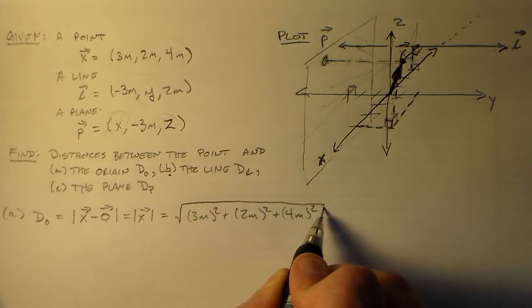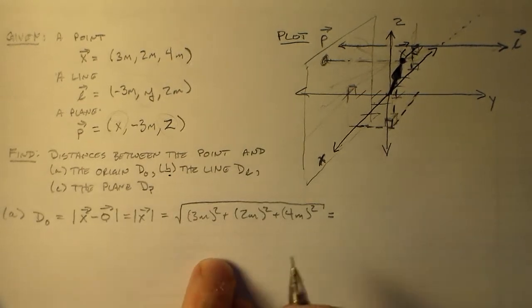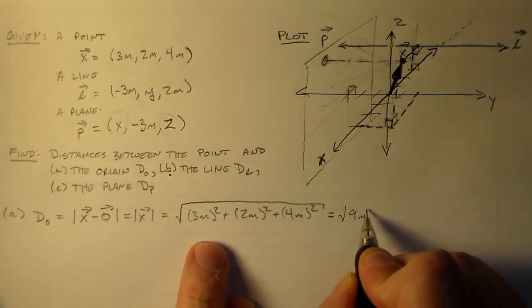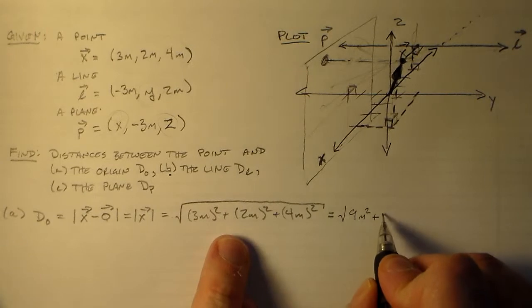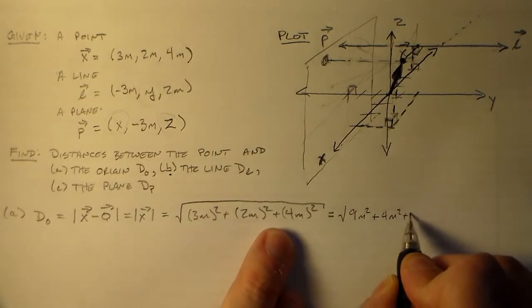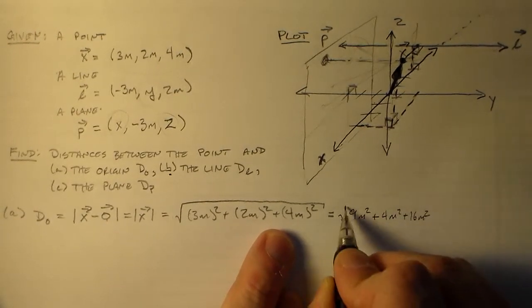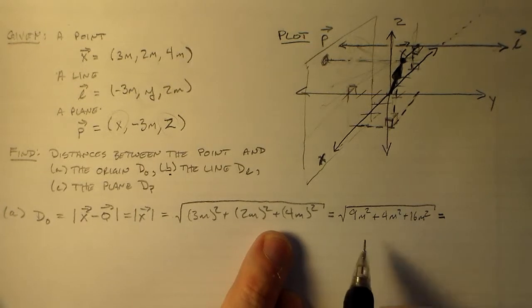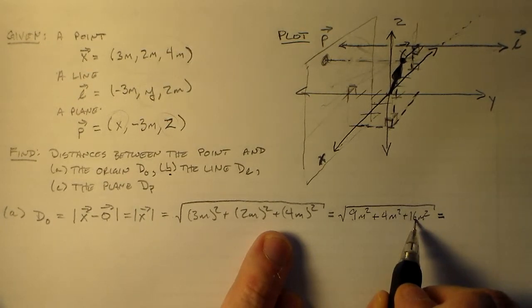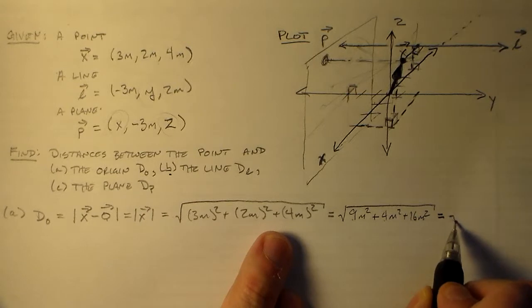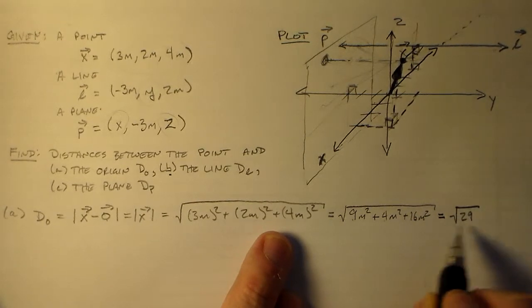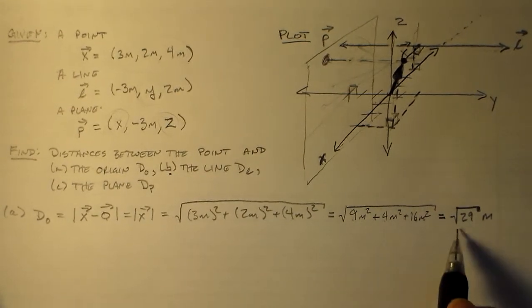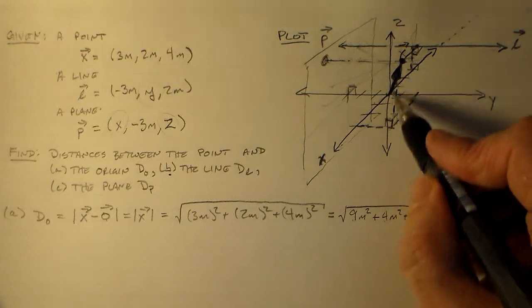So the magnitude of x is 3 meters squared plus 2 meters squared plus 4 meters squared. And like I said, I put no thought into this as to how nice the answer is going to look. So the answer is not going to look nice. We've got 9 meters squared plus 4 meters squared plus 16 square meters. 9 plus 16 is 25 plus 4 is 29. And the square root of 29 meters squared is the square root of 29 meters. So that's what we're stuck with, that's our d zero, that's that distance.